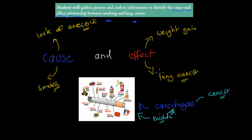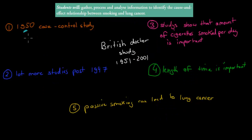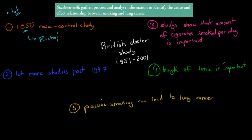We're going to go over the different types of studies that came around to show us the link between smoking and lung cancer. It starts in 1950. Before 1950, people didn't realize that smoking caused lung cancer, so a lot of people smoked. In 1950, someone called Richard Doll came around and conducted a case control study.